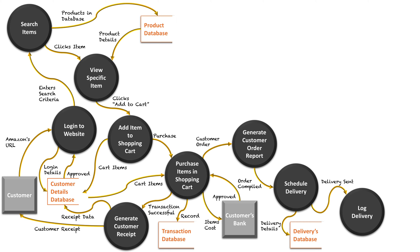Once the delivery gets sent, we log that it was dispatched, including the date and time of distribution — and that's stored on the delivery database. As we know with many products, they have RFID tags, so tracking data is stored on the product too. Because Amazon sells products globally, they can get lost in many ways, so tracking data is also stored on the delivery database to track products as they're being delivered to customers.